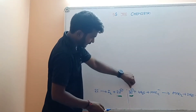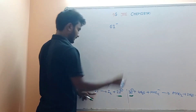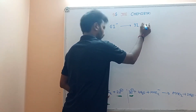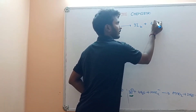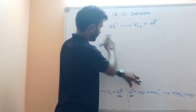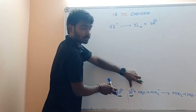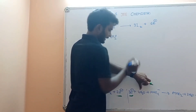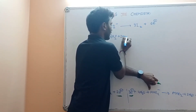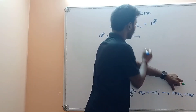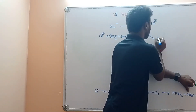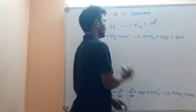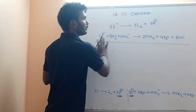3 into 2 is 6 electrons. Next equation: 2 into 3 gives 6 electrons. 6 electrons plus 2 into 4 is 8. 2 into MnO4 minus gives rise to 2 MnO2 plus 2 into 2H2O, which is 4H2O, plus 2 into 4 is 8OH minus. So the final combined equation is balanced.